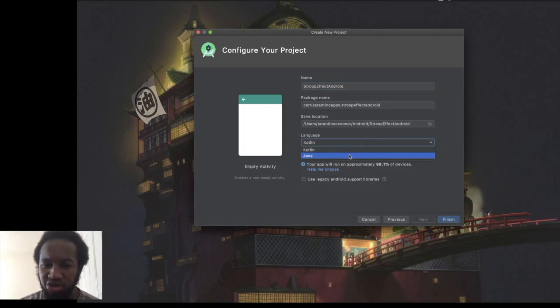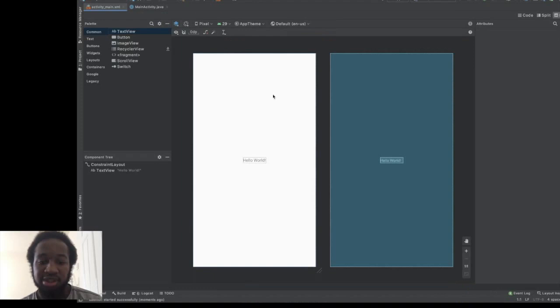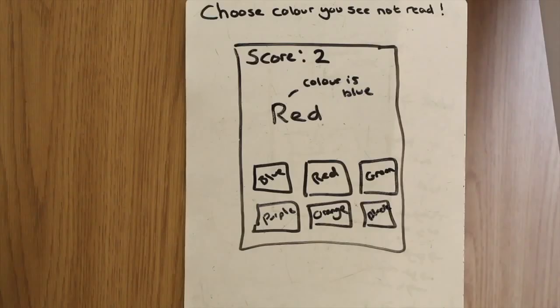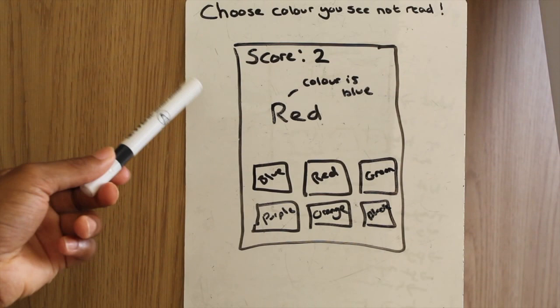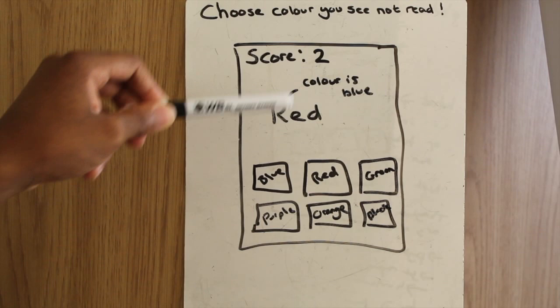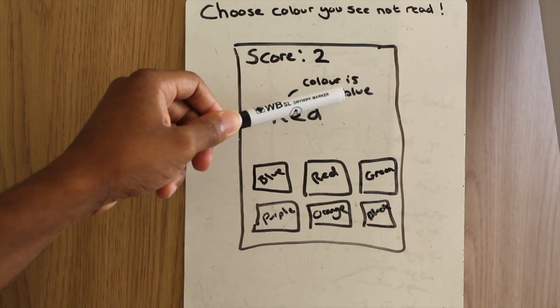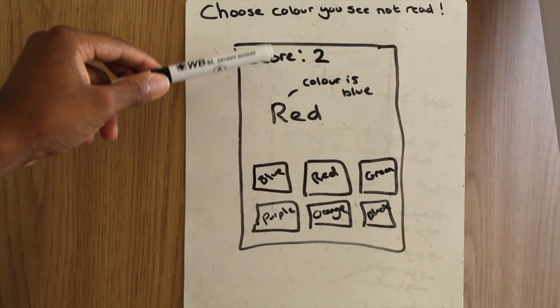Let's go straight to our design. Please forgive my handwriting and drawing skills. The idea of the game is that you choose the colour that you see and not read, which will probably make it a lot easier for children who cannot read. The application will be laid out with the score at the top, then the incongruent stimulus — the name of the colour, which will be different to the actual colour displayed. For example, the word red will be shown but the actual colour will be blue, yellow, or orange. Then we'll have some buttons which represent colours, and the user chooses the colour that they see. Our design will be very simple: a text view for the text and buttons for the colours.